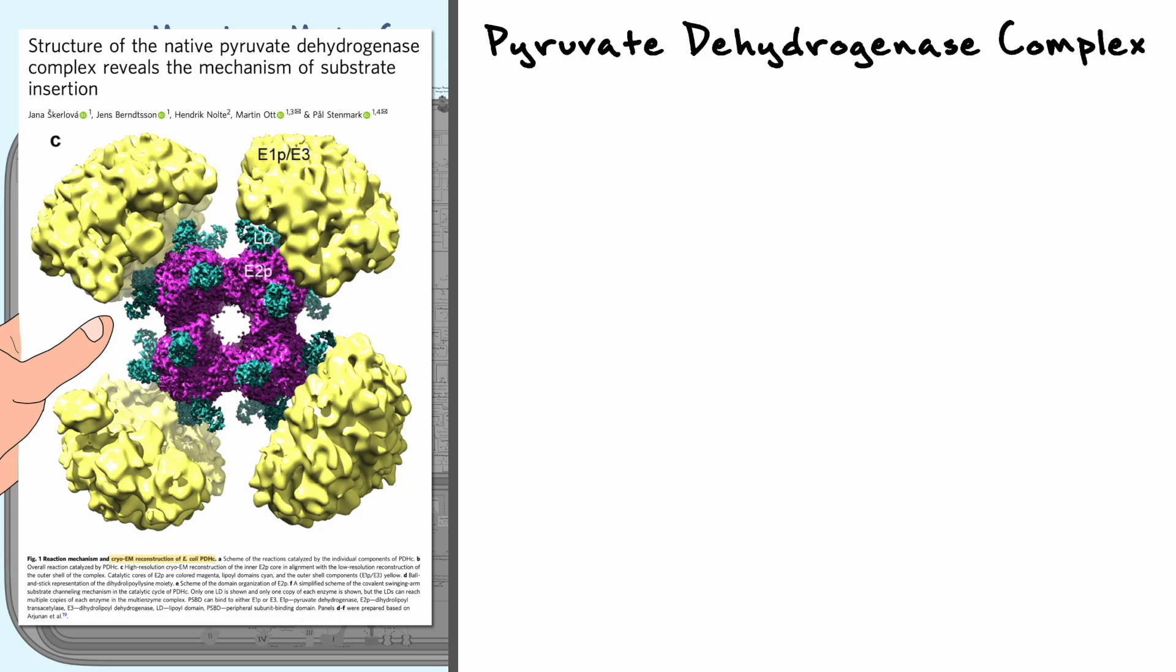The reason why cells evolved to have the PDC be a multi-enzyme complex over having E1, E2, and E3 be separate proteins has everything to do with efficiency. We won't go into the details in our discussion, but the idea is that having all the subunits bunched up together reduces the side reactions and drastically increases the chances that the successive steps happen efficiently. Now, as I said, the image here is of a bacterial protein, but it turns out that the human version of the PDC is even more complicated than that one. Nonetheless, the reactions that the human PDC catalyzes are very similar and still end up converting pyruvate to acetyl-CoA.